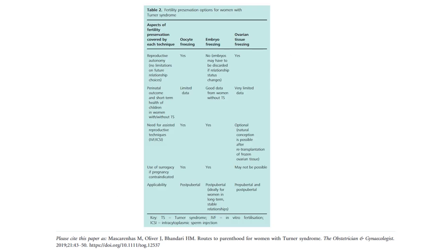Okay, so this table talks about fertility preservation options for women with Turner's syndrome. Again, something that can easily come up as an EMQ as options to discuss with potential couple, for example. So aspects of fertility preservation covered by each technique. So you've got reproductive autonomy, oocyte freezing yes, embryo freezing no, embryos may have to be discarded if relationship status changes, ovarian tissue freezing yes. Perinatal outcome and short-term health of children in women with or without Turner's syndrome. So oocyte freezing is limited data. Embryo freezing, good data for women without Turner's syndrome. Ovarian tissue, there is very limited data.